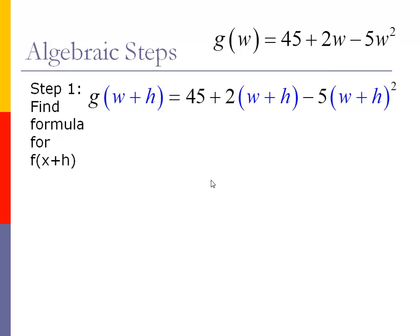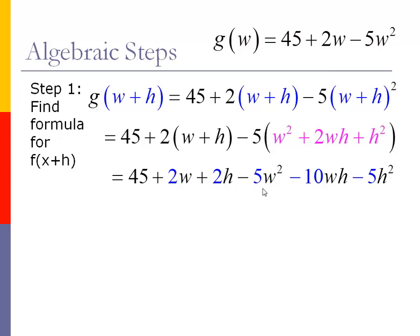All right, so our first step is we want to get that g of w plus h. So we're taking the package deal, the w plus h, and wherever we see w in the original formula, we're putting a w plus h. Because we have w plus h quantity squared, that's w plus h times w plus h. In the pink here, a w squared plus 2wh plus h squared. And then bring the two through and bring that negative five through. And so now we have a formula for the g of w plus h, that first part of it.